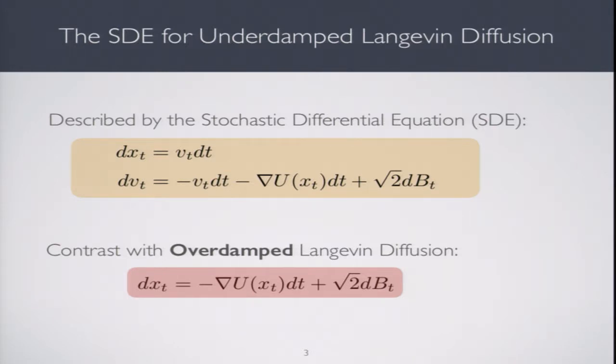Finally, if you cover up the dB_t term for both, overdamped Langevin diffusion ends up looking like gradient descent, gradient flow. If you look at underdamped and cover up the Brownian motion term, the remaining dynamic is like gradient flow with momentum. At least cosmetically, it looks like an interesting relationship.